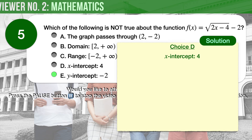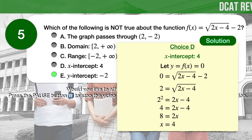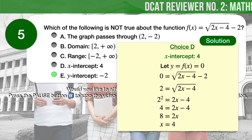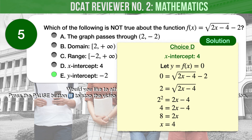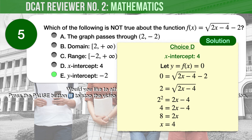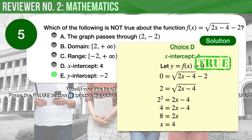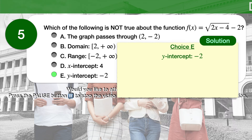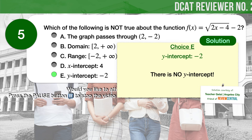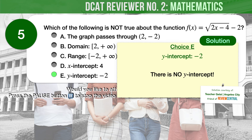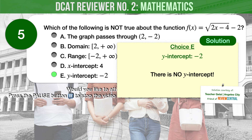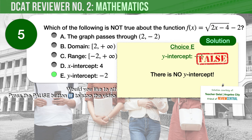Choice D: the x-intercept is 4. To find the x-intercept, we set y, which is f(x), to 0. Solving 0 equals the square root of the quantity 2x minus 4, minus 2, we arrive at x equals 4. Therefore, choice D is likewise true. Choice E: the y-intercept is negative 2. We've established that the domain is from 2 to infinity, so x cannot be 0, which means there is no y-intercept. Therefore, the statement in choice E is not true.